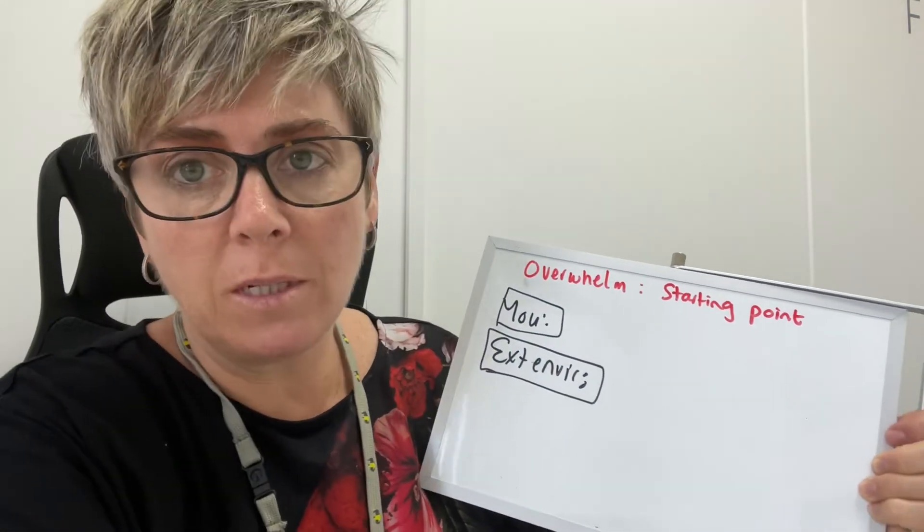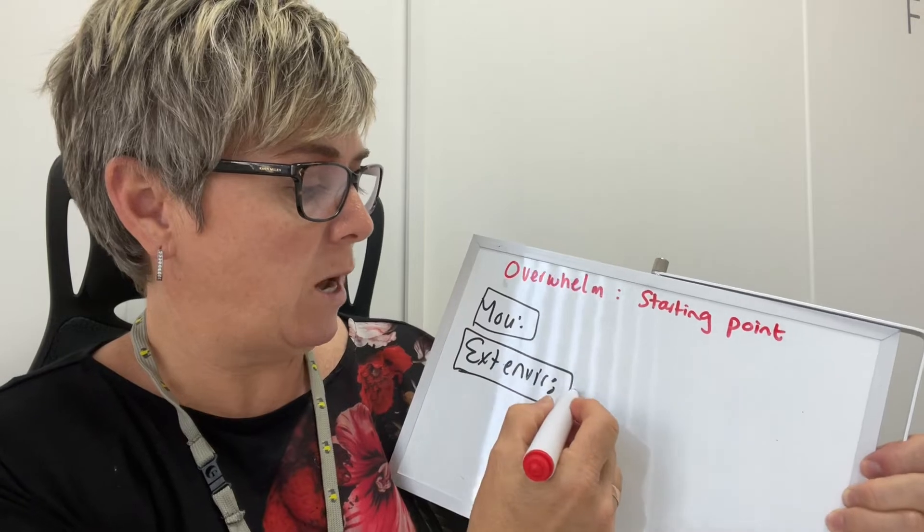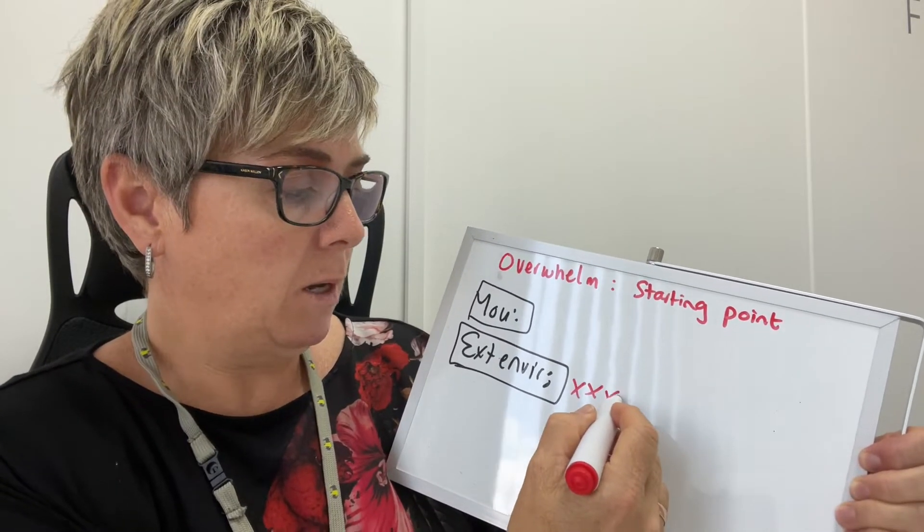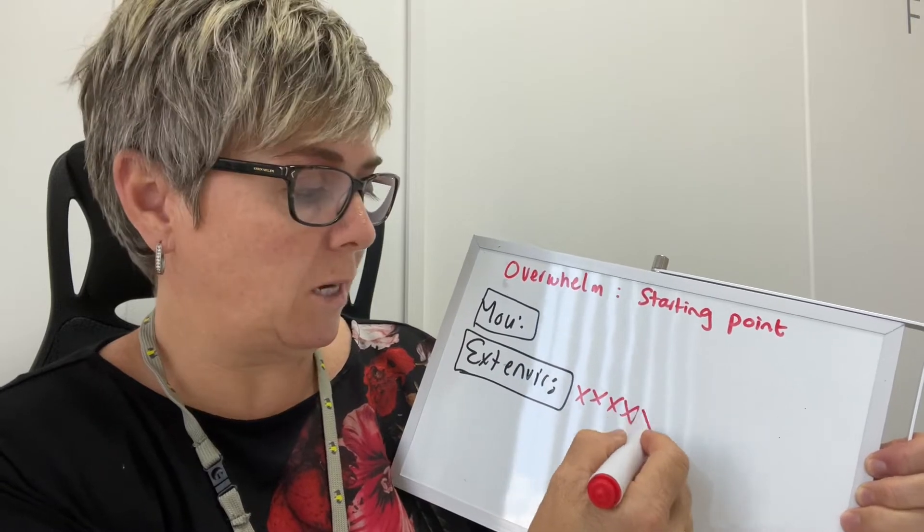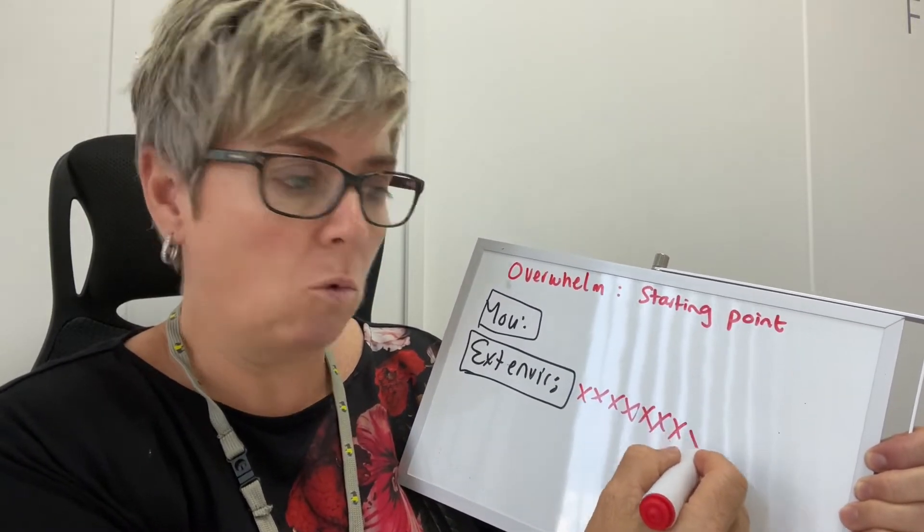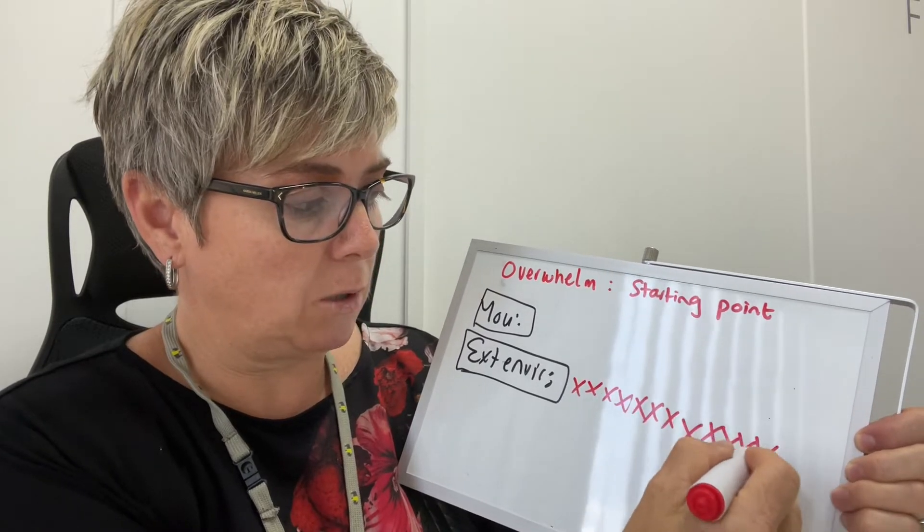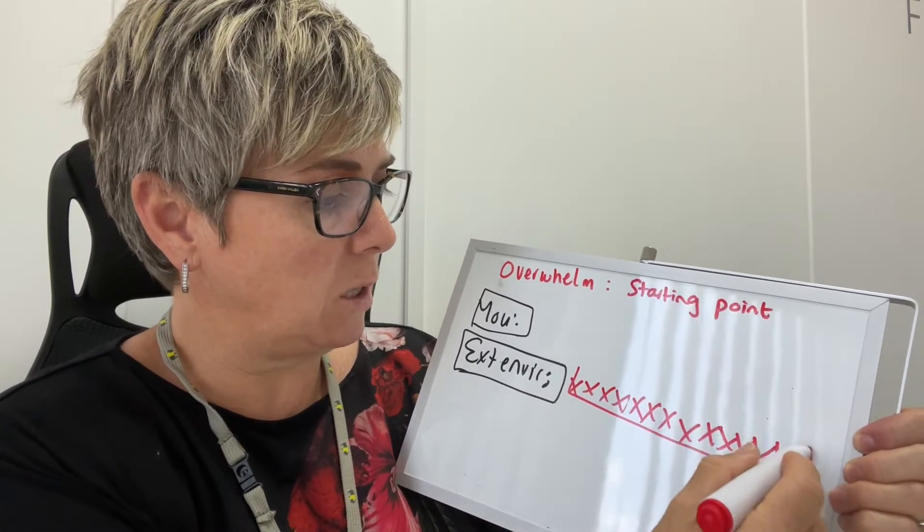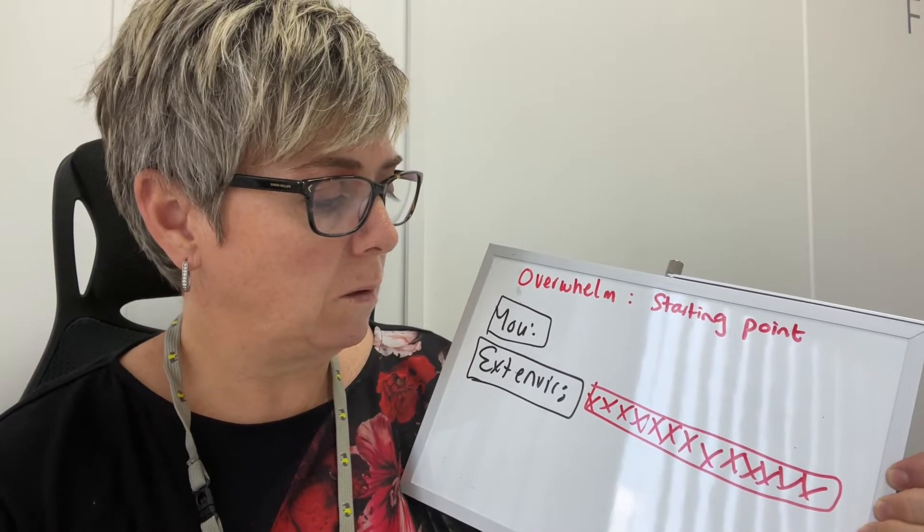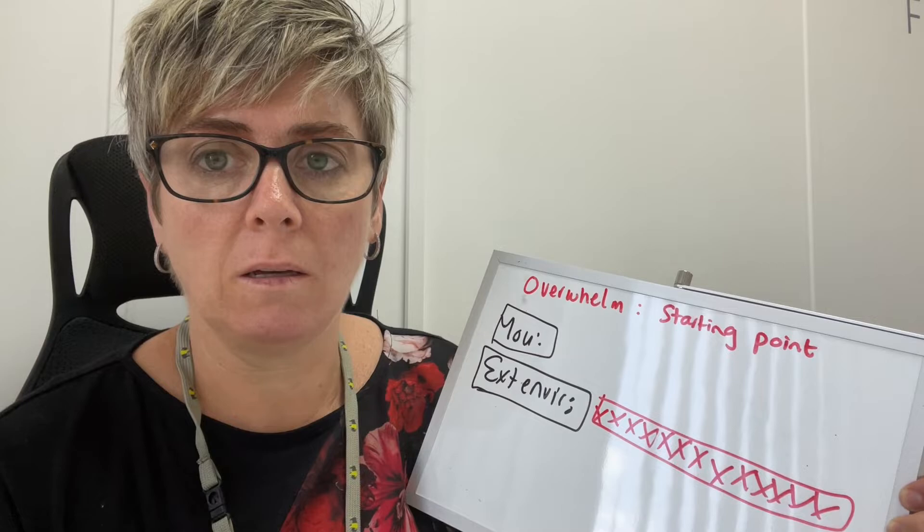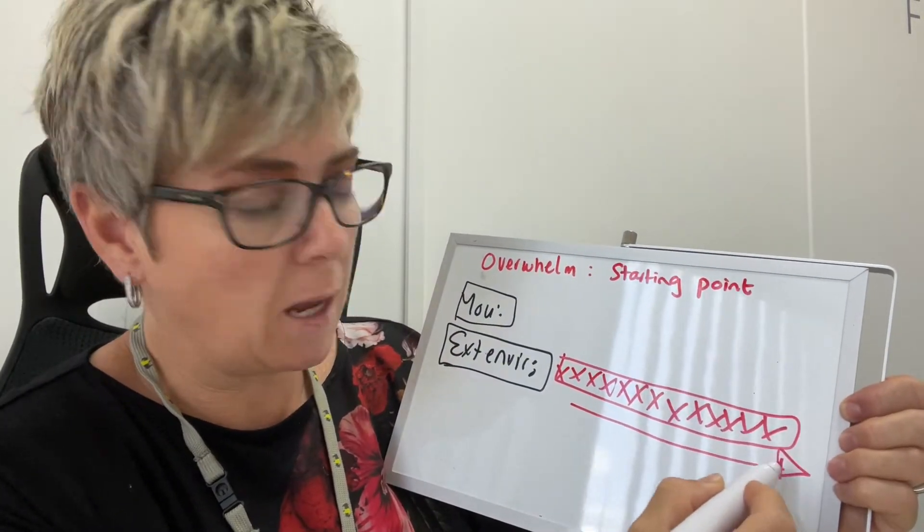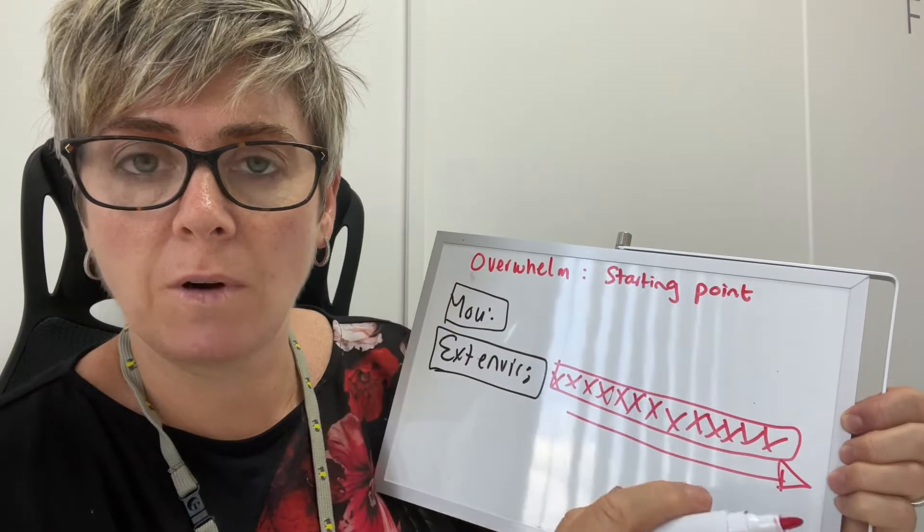What happens with our external environment is that we have one thing happen and another thing and another thing, then it's relationships, our job, family and friends, more pressure, and so on. This accumulates into a massive thing that overrides everything and just takes over.